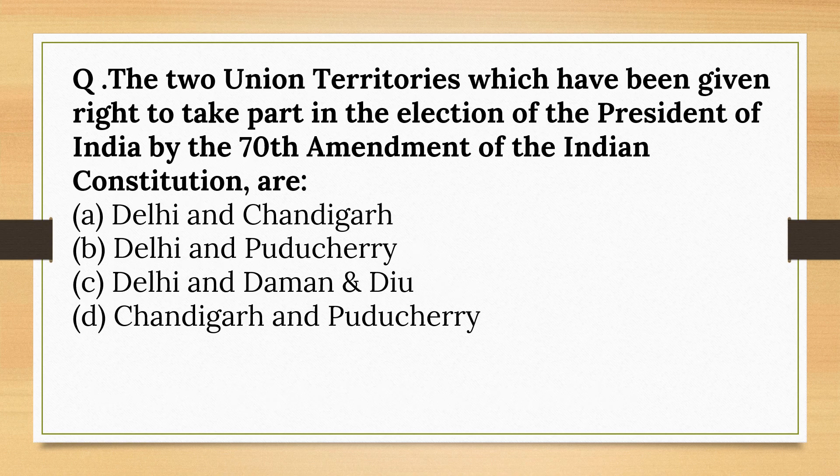The two Union Territories which have been given the right to take part in the election of the President of India by the 70th Amendment of the Indian Constitution are Delhi and Puducherry.